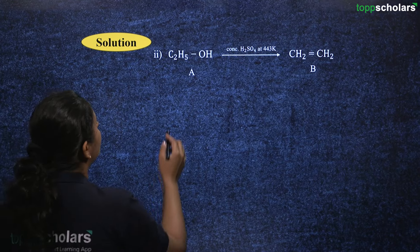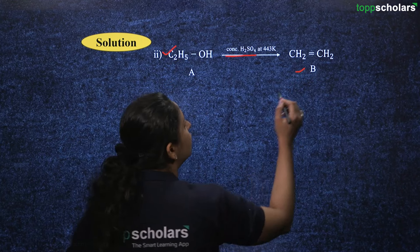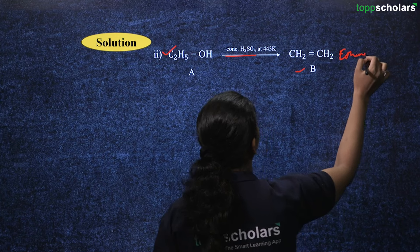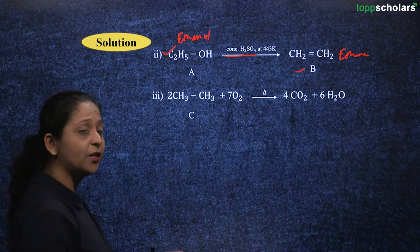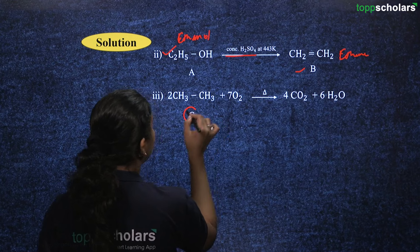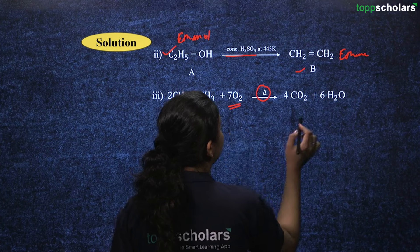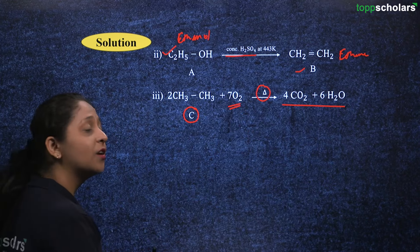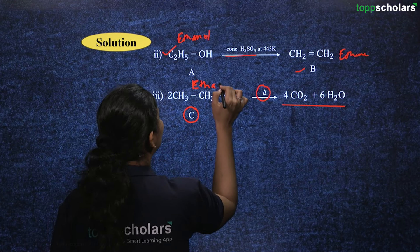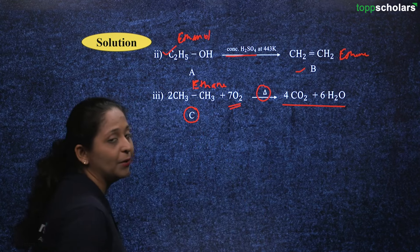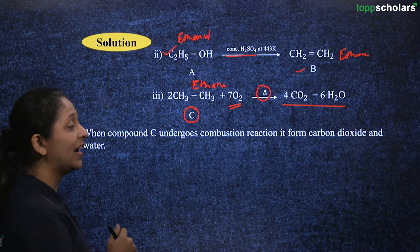The chemical equation for A to B: ethanol reacting with concentrated sulfuric acid produces ethene (C2H5OH → CH2=CH2 + H2O). For the third question, compound C (ethane) undergoes combustion in the presence of oxygen, producing carbon dioxide and water.